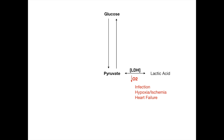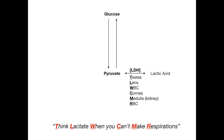An elevated lactate cues us that there may be some underlying infection or hypoxic or ischemic event. Now in certain tissues, this is the pathway that pyruvate will primarily go through — the testes, the lens, white blood cells, the cornea, the medulla of the kidney, and red blood cells. To memorize these, use the mnemonic: 'Think Lactate When you Can't Make Respirations' — T for testes, L for lens, W for white blood cells, C for cornea, M for medulla of the kidney, R for red blood cells.